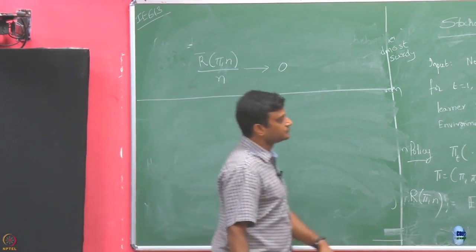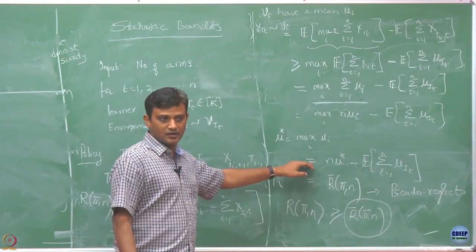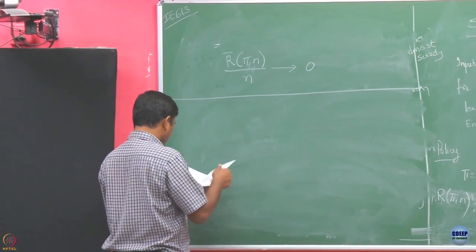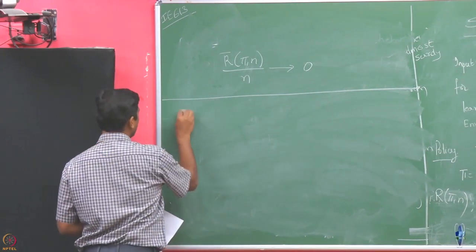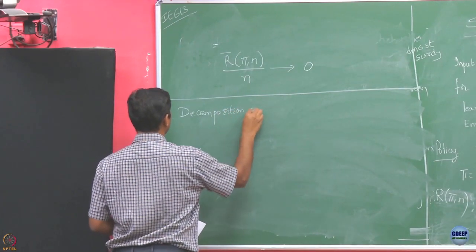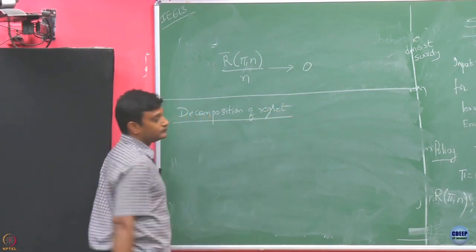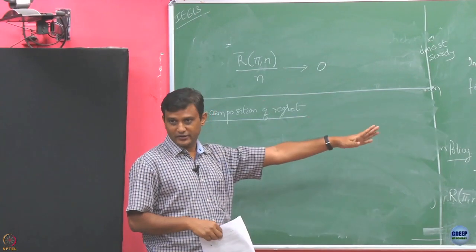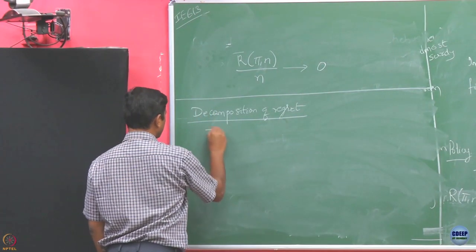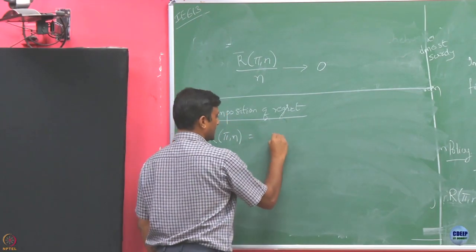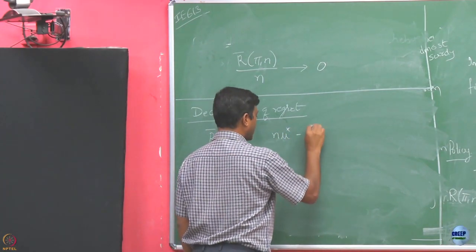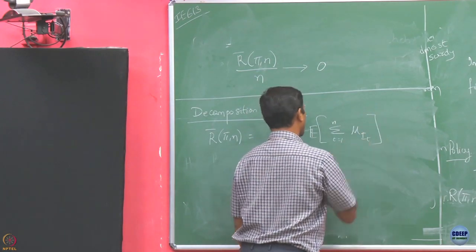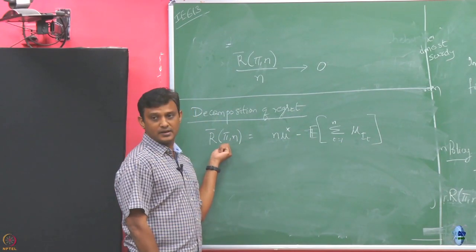We will discuss one more property of this regret, which we call the regret decomposition. Henceforth, when I say regret I actually mean pseudo-regret. For a policy pi, we have n times mu-star minus the expected value of the sum from t = 1 to n of mu_{i_t}, where mu_{i_t} depends on your policy pi.